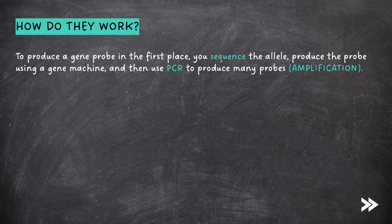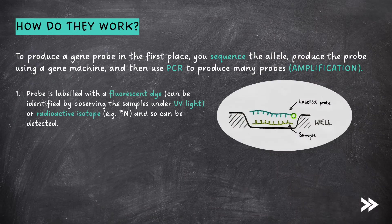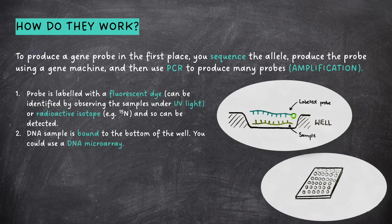Then use PCR to produce many probes. First of all, the probe is labeled with a fluorescent dye, which can be identified by observing the sample under UV light, or you could label the probe with a radioactive isotope such as heavy 15N nitrogen so the probe can be detected. The DNA sample is bound to the bottom of the well. Note that you could use a DNA microarray, which is a plate with many little wells for samples, and then you could observe the samples under UV light.